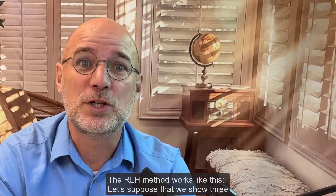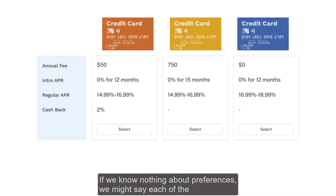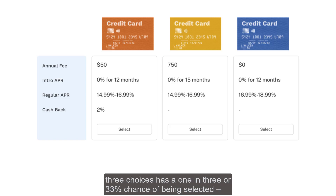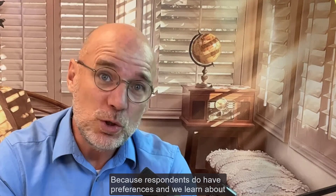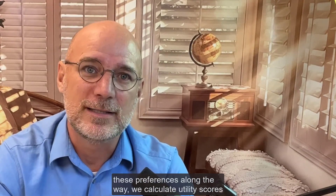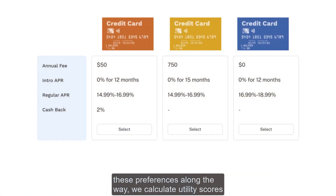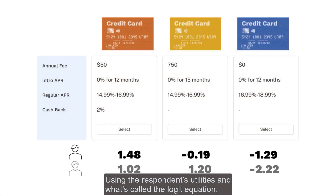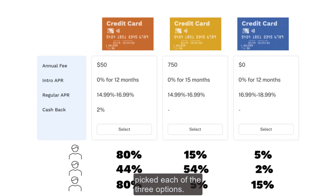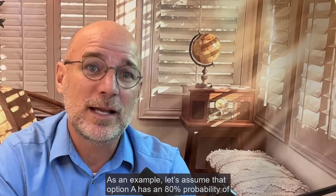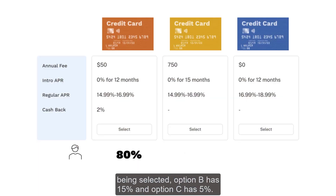The RLH method works like this. Let's suppose that we show three choices in a choice task. If we know nothing about the preferences, we might say that each of the three choices has a 1-in-3, or 33%, chance of being selected — the rate we get from random chance. Because respondents do have preferences, and we learn about these preferences along the way, we calculate utility scores for each respondent. Using the respondent's utilities and what's called the logit equation, we can easily calculate the probability that a respondent would have picked each of the three options. As an example, let's assume that option A has an 80% probability of being selected, option B has 15%, and option C has 5%.